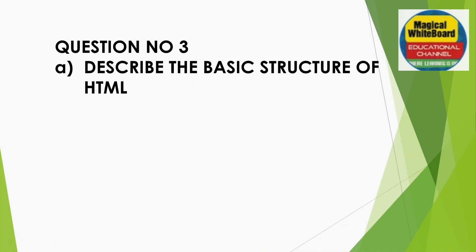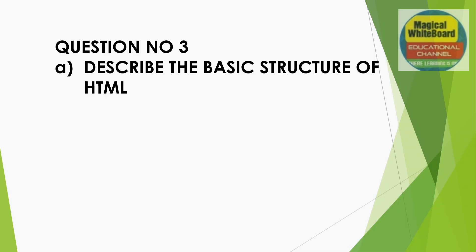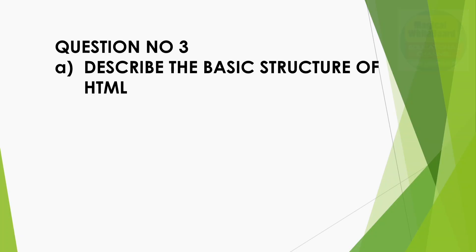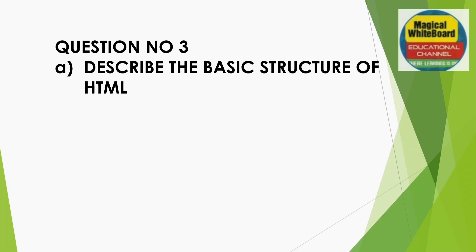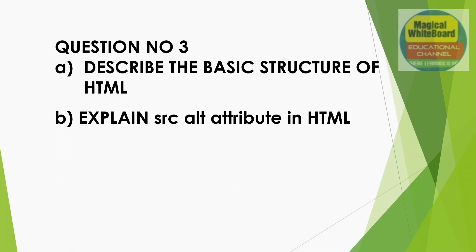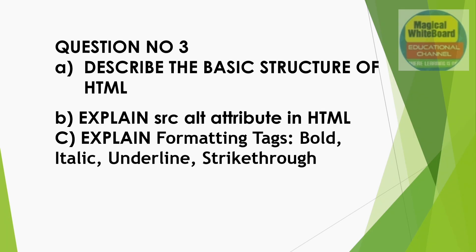Question number 3: Describe the basic structure of HTML. The entire structure of an HTML page starts with the HTML tag and ends with closing HTML. Second is the head section and body. Next: Explain the SRC and ALT attributes in HTML, with an example. Also explain formatting tags — bold, italic, underline, strikethrough. These are formatting tags.